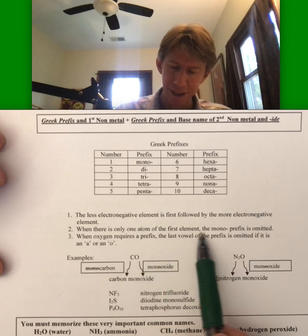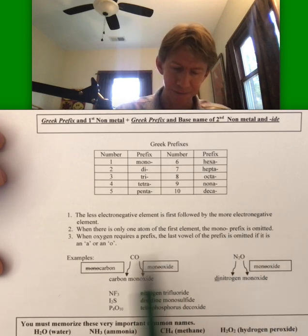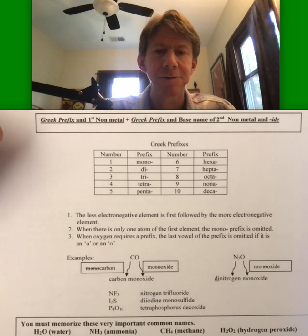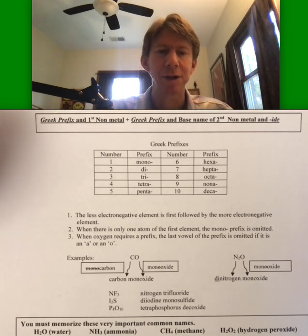When there is only one atom of the first element, the mono prefix is omitted. When oxygen requires a prefix, the last vowel of the prefix is omitted if it is an A or an O.